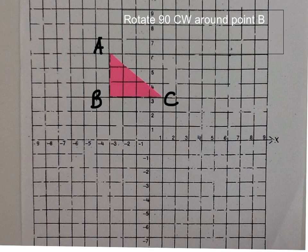Next, we're going to rotate our triangle around the point B. So point B is going to be fixed. And we're going to rotate our triangle 90 degrees clockwise. Pause your video, then restart it to check your answer.